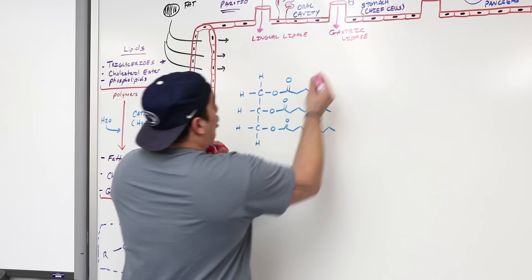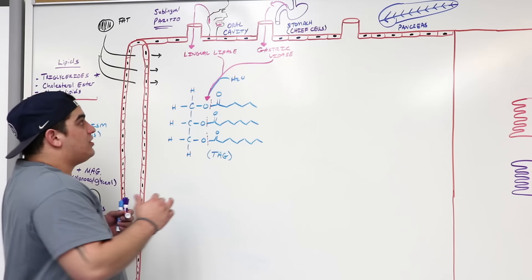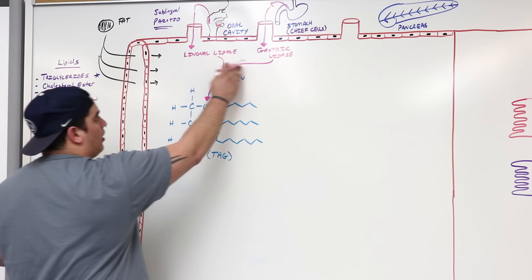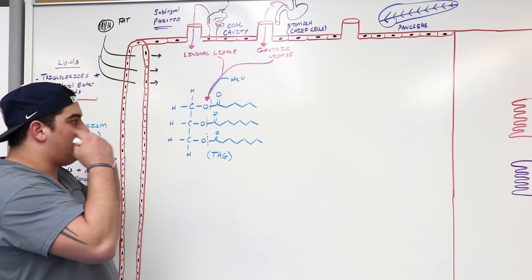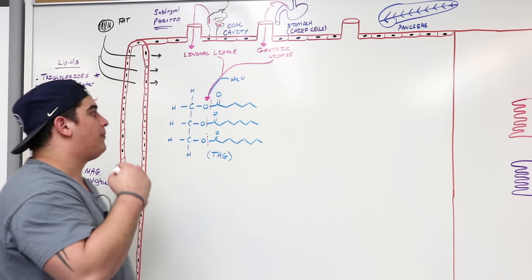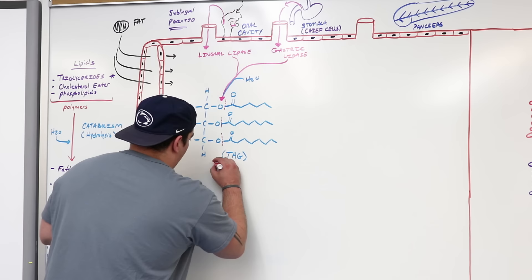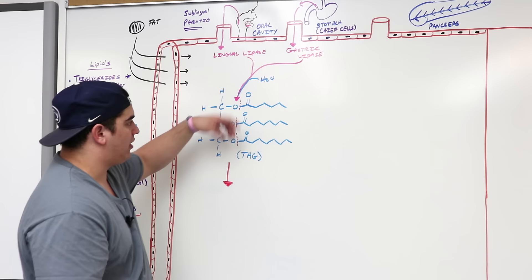Lingual lipase and gastric lipase are going to come in and focus on breaking these ester bonds in triglycerides. They're not doing all of them, because they play a significant role in chemical digestion — but not enough to break down all of the fat. Whenever we ingest food, lingual lipase comes from the oral cavity and gastric lipase from the stomach. These enzymes don't have a lot of time to completely break down all the triglycerides.